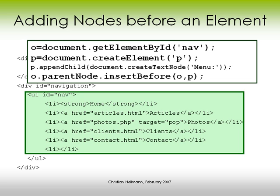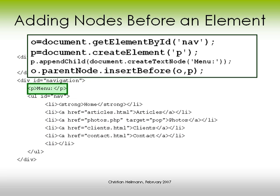Using insertBefore is a bit tricky because the order is somewhat confusing. You have to get your element with id 'nav', which we stored in a variable. Then you go to its parentNode, which is the div. Then you say insertBefore, passing the new p and the old nav element. Whenever you use insertBefore, you cannot just reference the element you want to insert before — you have to go via its parentNode. That will add our p in front of the ul.